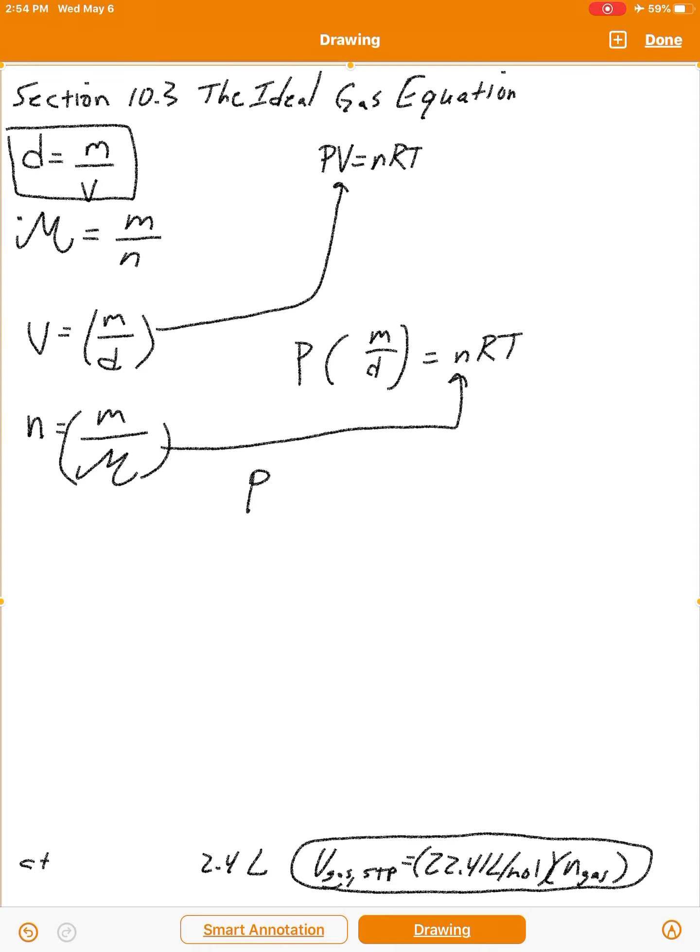Let's substitute that ratio right in here. So now we have P, I'm going to get rid of the parentheses, PM over D equals M over molar mass RT. This is kind of a mess, but notice that there's mass on both sides, so I can divide both sides by mass, and that simplifies to pressure over density equals RT over molar mass. This is one way to show this relationship between density and molar mass. This is not a convenient way to do it, but what I'll do is cross multiply.